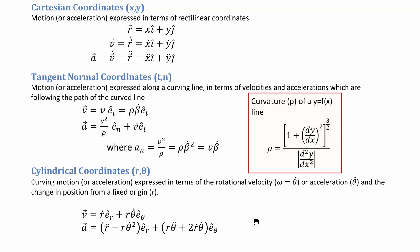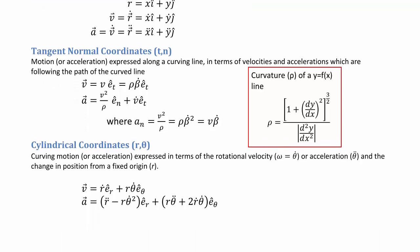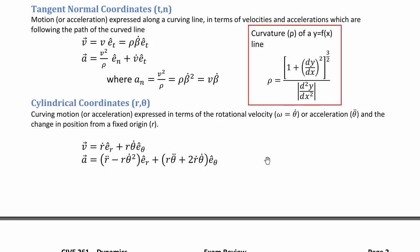The last coordinate system is cylindrical coordinates, which express motion in systems that rotate around one single point. A position vector r comes out from that fixed reference point, defined in the direction of the r-vector. Theta is always perpendicular to r and in the direction of motion. For circular motion, tangent-normal and cylindrical coordinates collapse onto each other, with the key difference that the normal axis and the r-axis go in opposite directions.